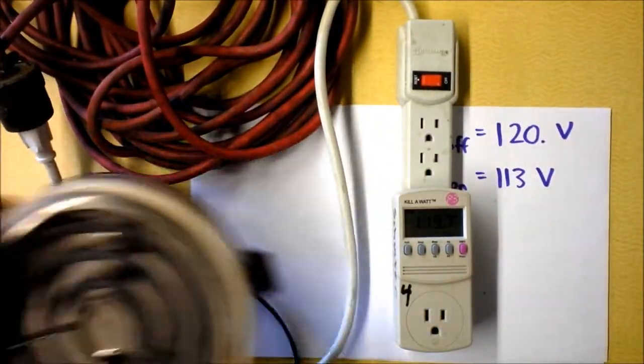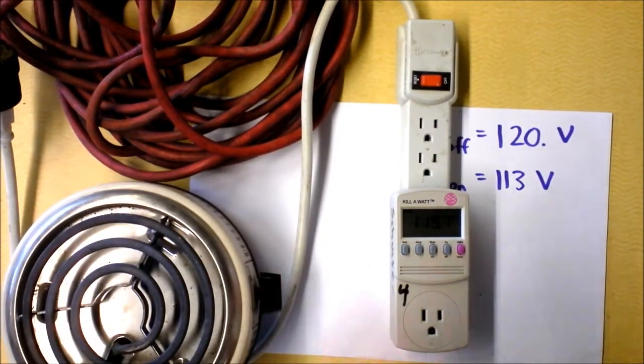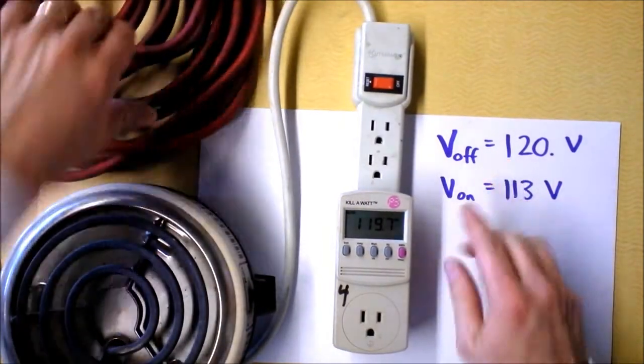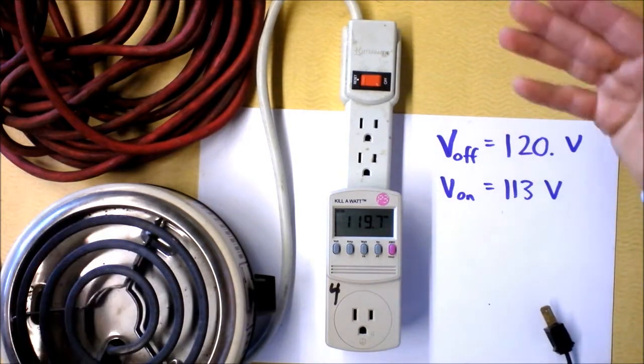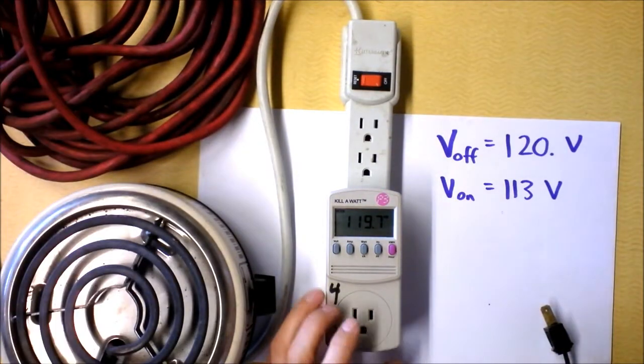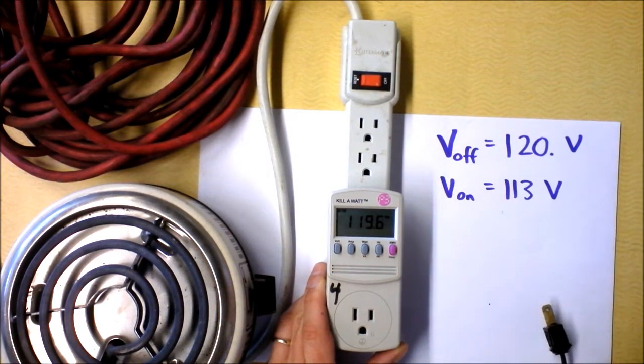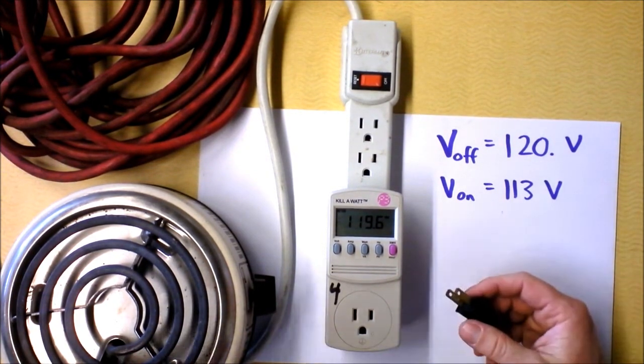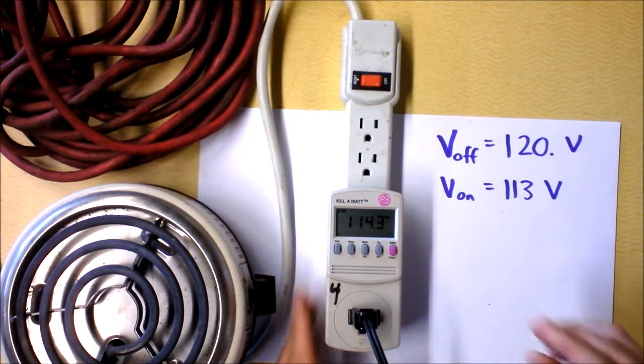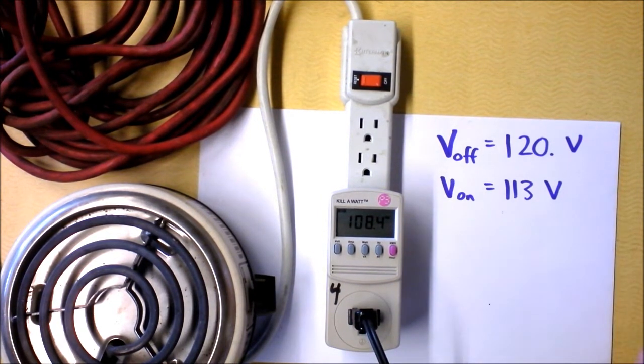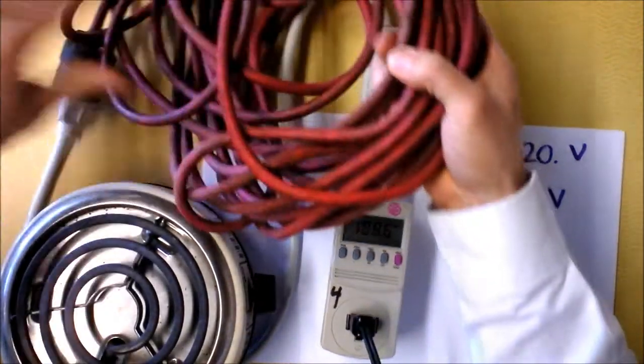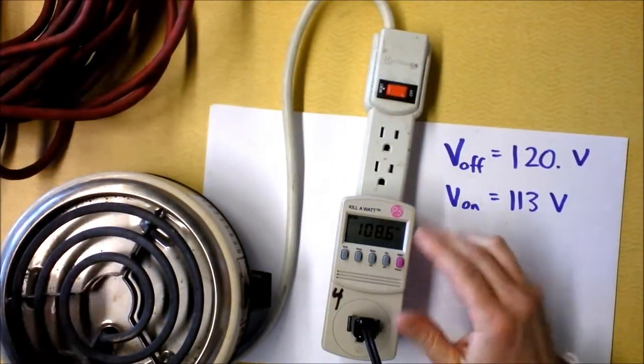So my plan now is to turn on the hot plate again. Watch this. I've got the hot plate, and notice still, the voltage when it's off is 120 volts. Watch how significant it is. While I plug this in now, the voltage is not going to drop to 113. It's going to drop to freaking 108. That means I've added additional resistance in this honkin' 15 meter junky old wire.